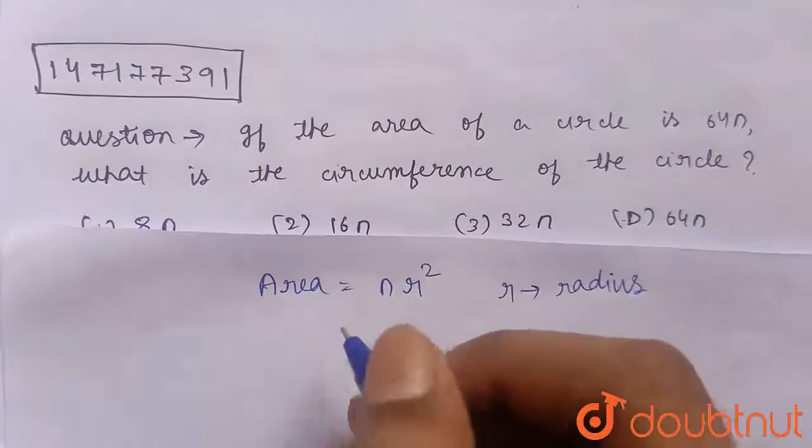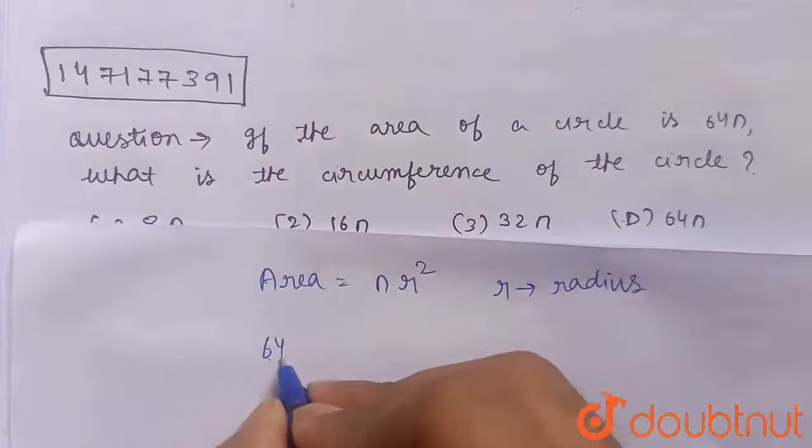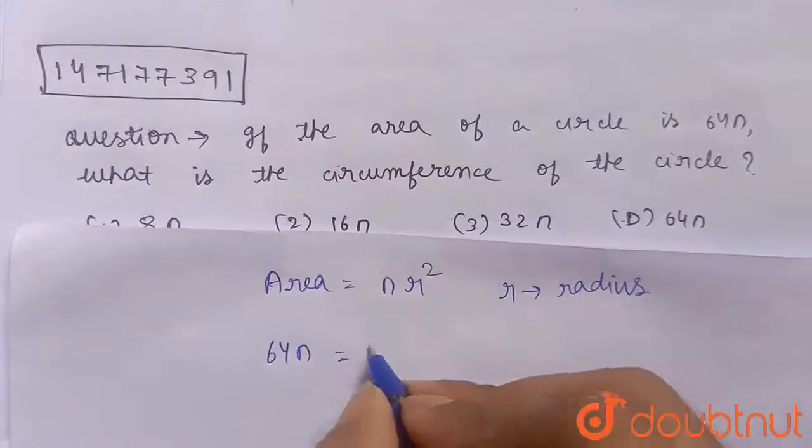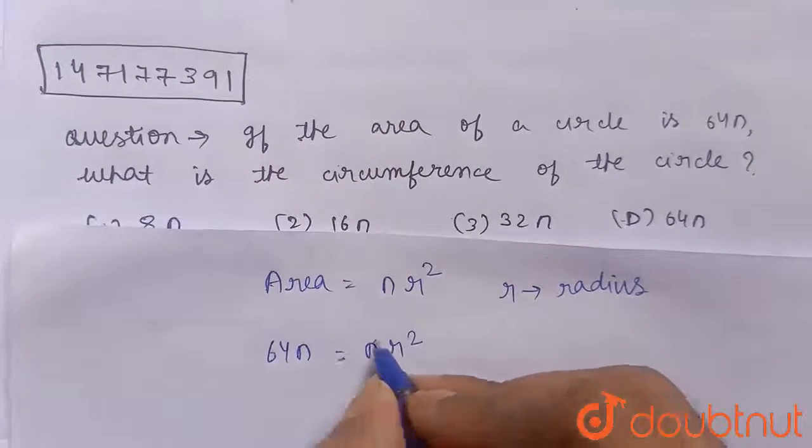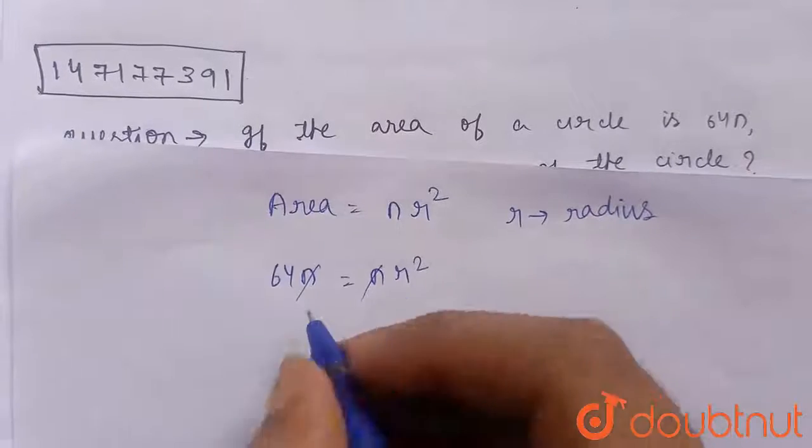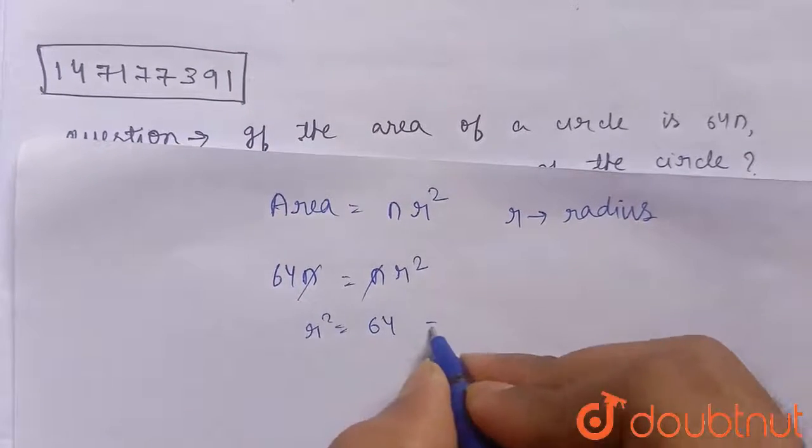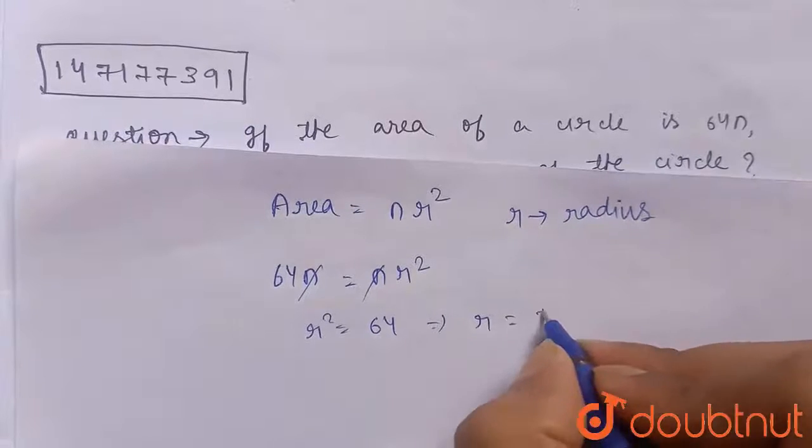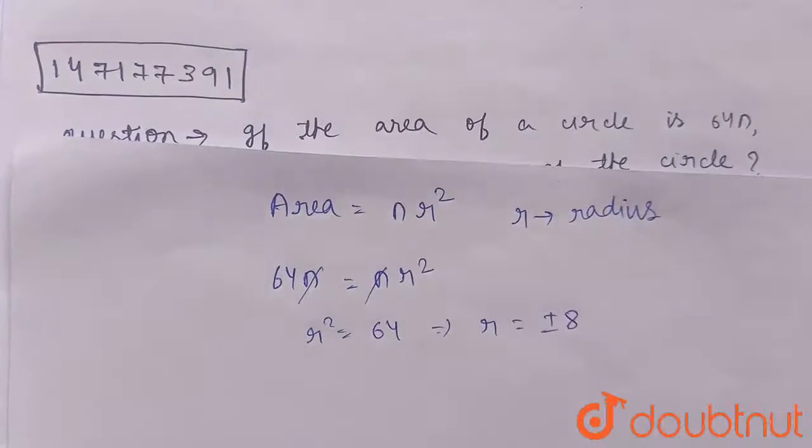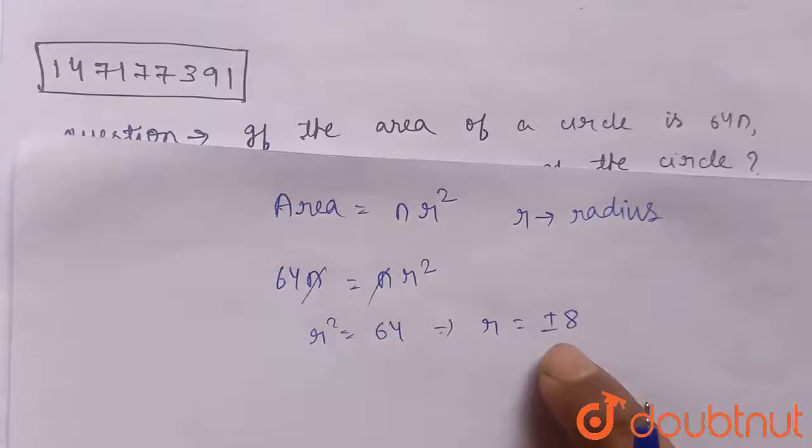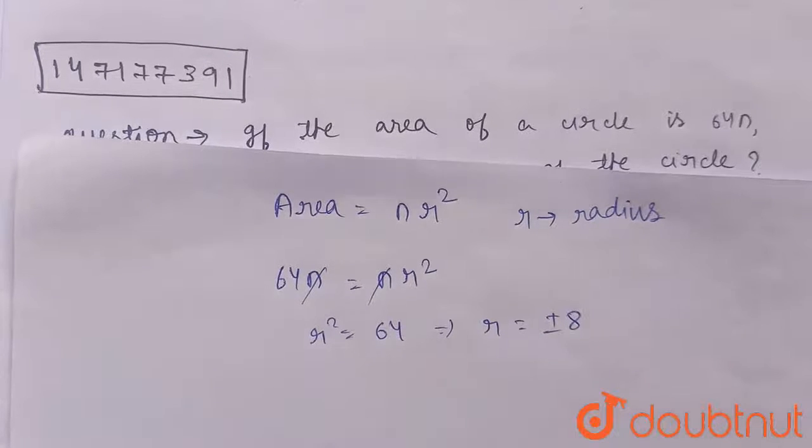Now, what is given in the question? The area is 64π. So we will equate this to πr², which is the formula. π gets cancelled, so r² will be equal to 64. This implies r will be equal to plus or minus 8, because both plus and minus 8 squared will give 64.